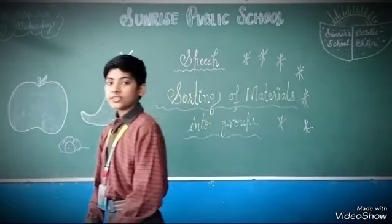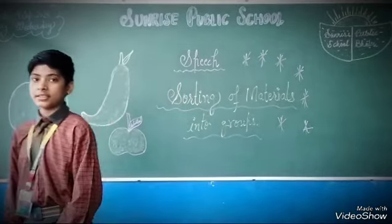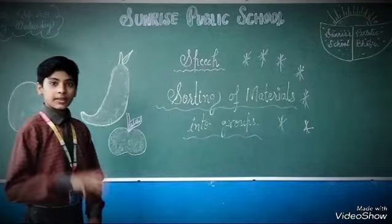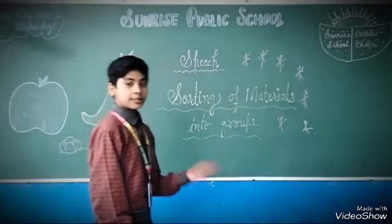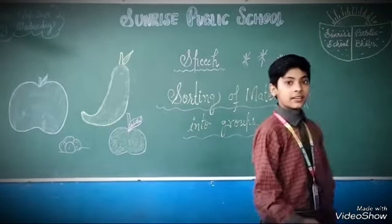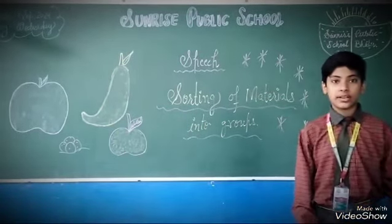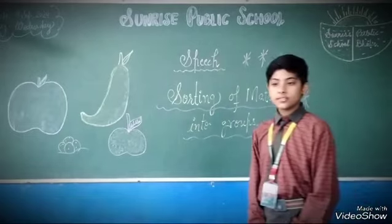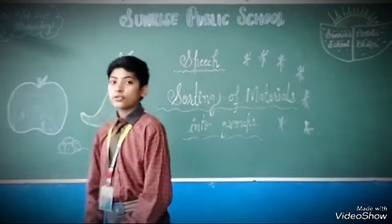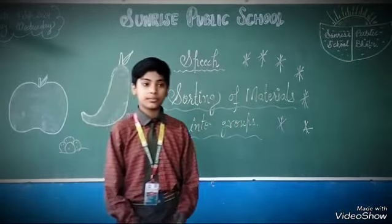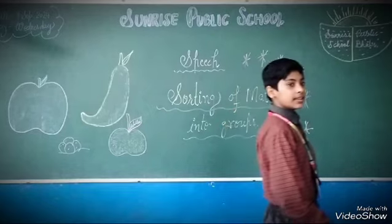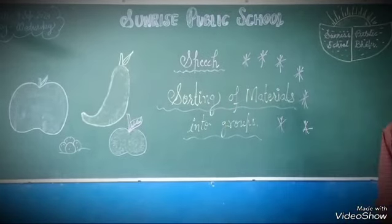Third topic is transparency. There are three types of transparency: transparent, opaque, and translucent. Transparent material is the material through which an object can be seen clearly.